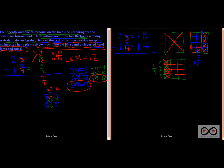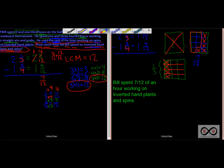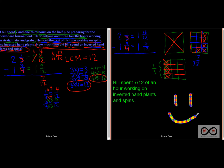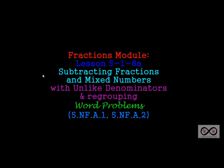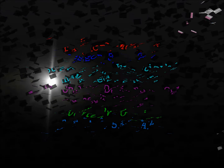In our math job we had to figure out how much time Bill spent on inverted hand plants and spins. Bill spent seven-twelfths of an hour working on inverted hand plants and spins. In our problem we have numbers in our mathematical model, pictures in our area model, and words in our complete sentence — a well-rounded answer. That was a quick look at subtracting fractions and mixed numbers with unlike denominators and regrouping in a word problem. Thanks for checking out worksheetsandwalkthroughs.com — see you next time!